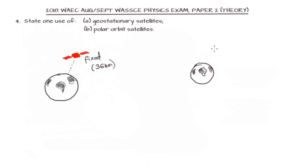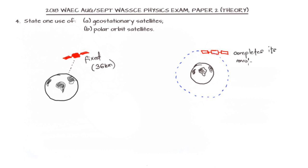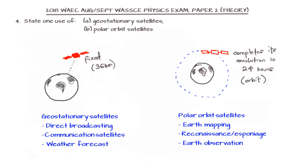For polar orbit satellites, the satellite traverses an orbit around the Earth with a period of 24 hours, circumnavigating the globe in one day. One of the very good uses for polar orbit satellites is espionage or spying — observing what is happening at a particular location and checking if it has changed on the next pass. It is also used for Earth mapping and many other purposes.